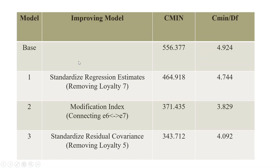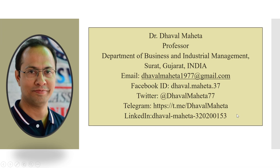To summarize: the base model had a C minimum of 4.924. When Loyalty 7 was removed using standardized regression estimates, it improved to 4.744. When E6 and E7 were co-variated using modification indices, it reduced to 3.829. When Loyalty 5 was removed based on standardized residual covariance, it became 4.092. You can stop where it gives the best model fit — 3.829 in this case. This is how you improve model fit indices using these three methods.